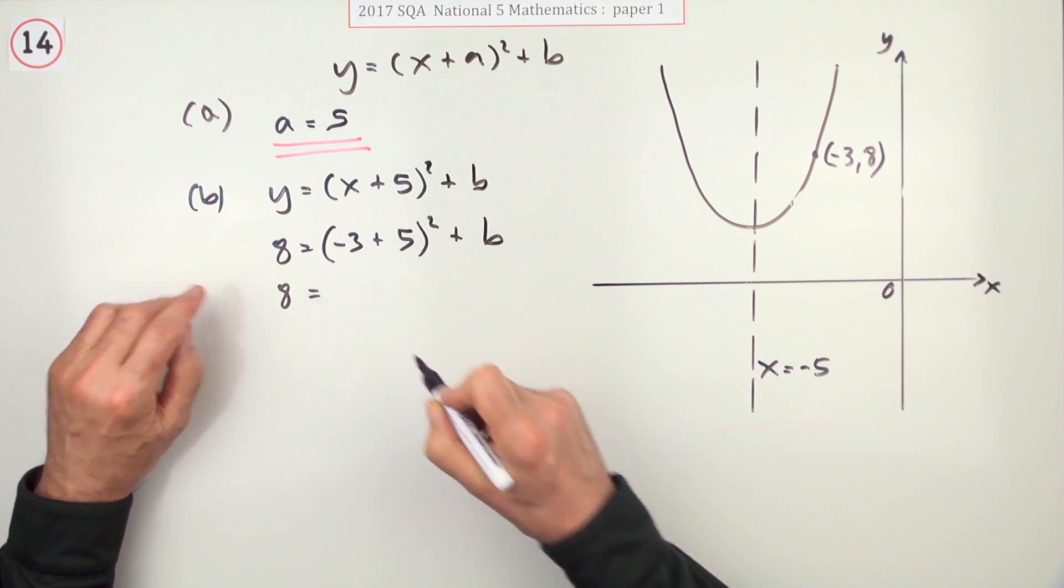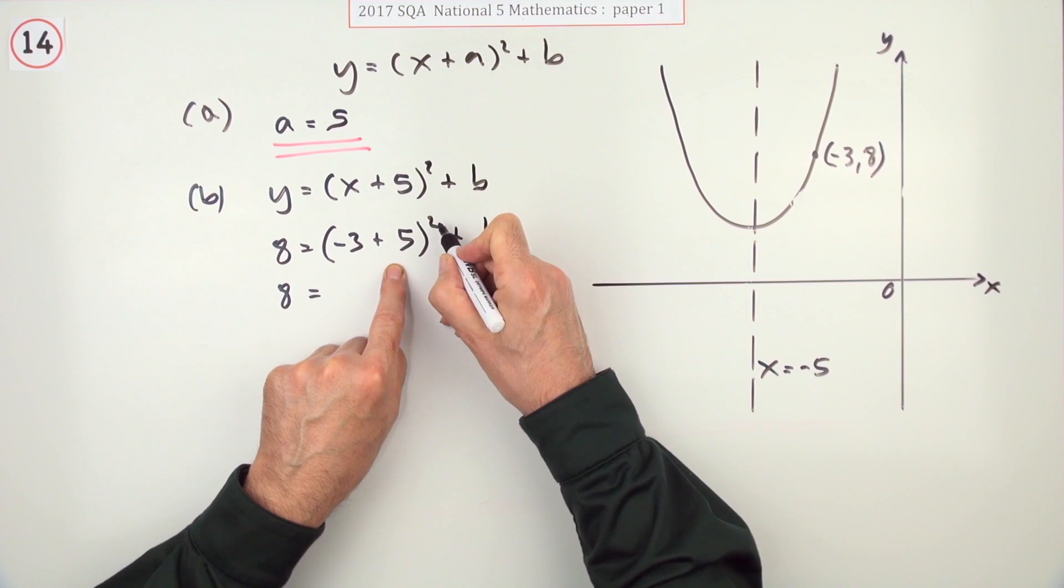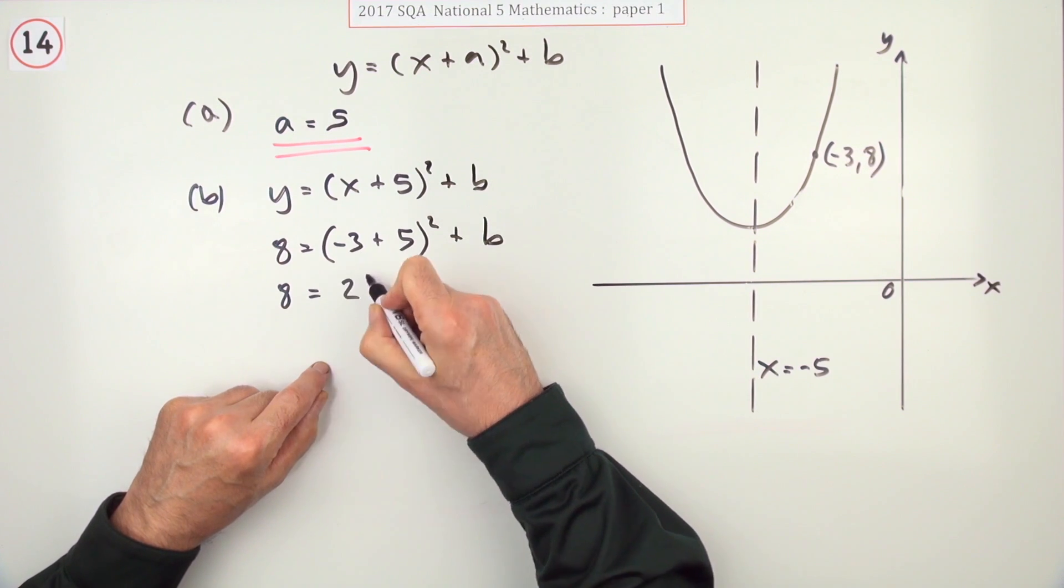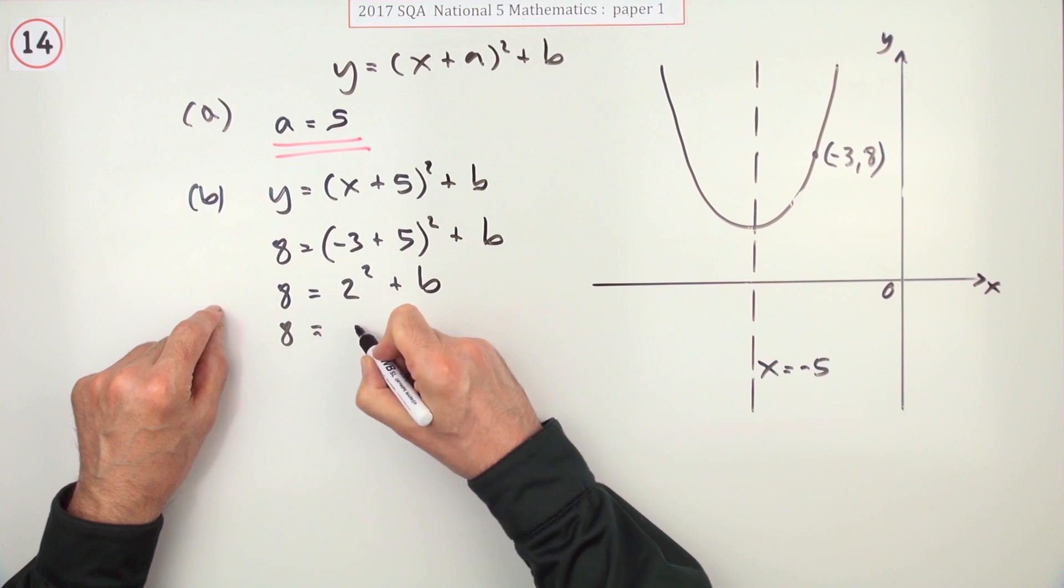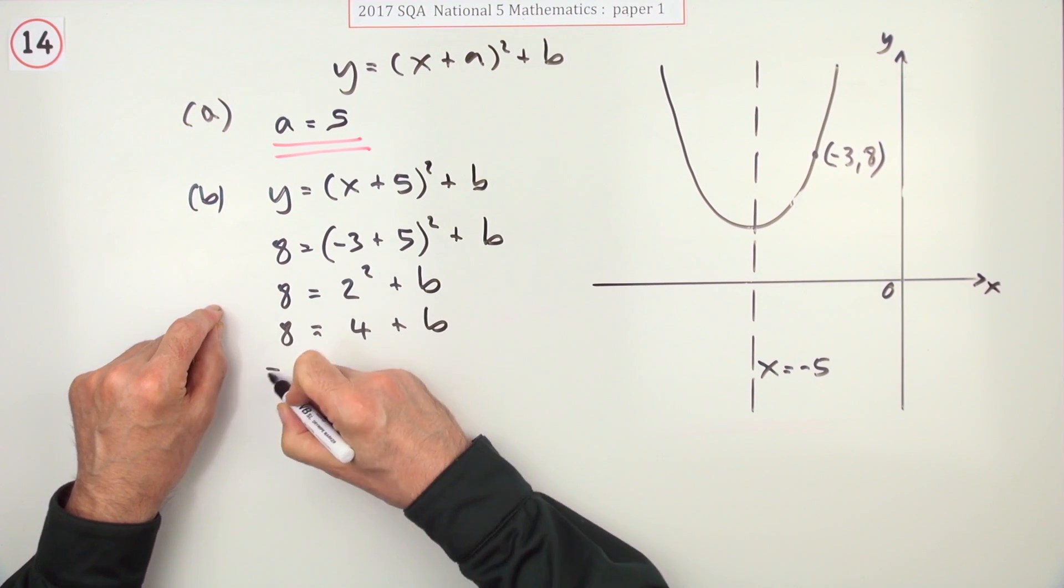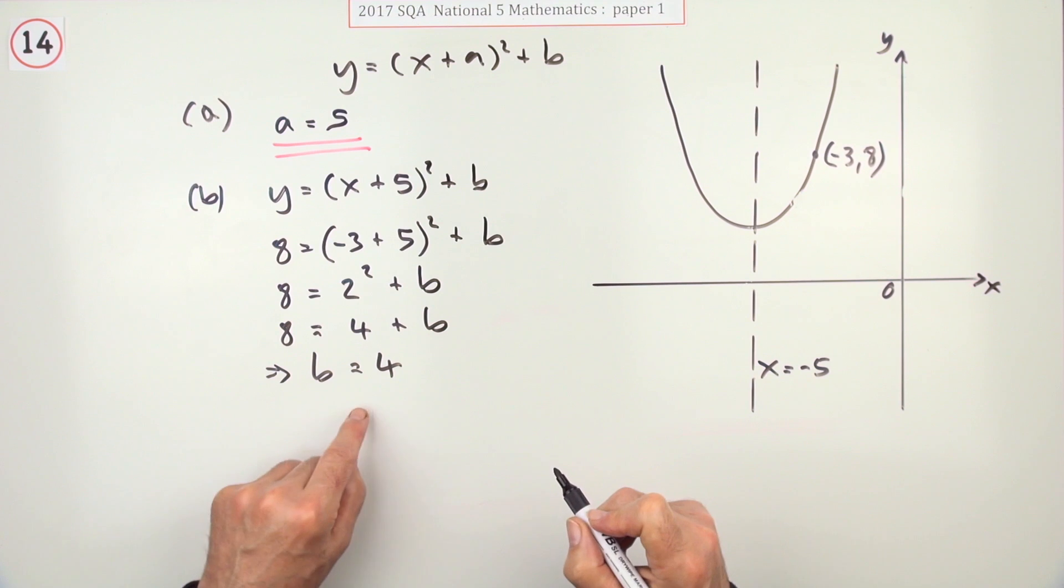So 8 is equal to negative 3 and 5 is 2. 2 squared is 4. I'll just put it down. 2 squared plus b. So 8 is equal to 4 plus b. I think you can just quite safely say 4 and 4 is 8. So b is 4.